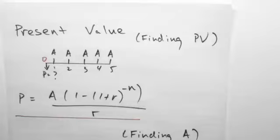Otherwise you can just use this formula: P equals A bracket 1 minus 1 plus r to the power of minus n, all over r. And A is the consistent payment.